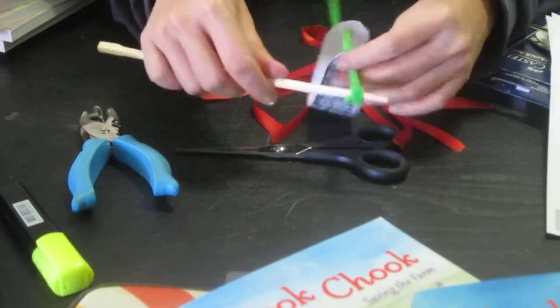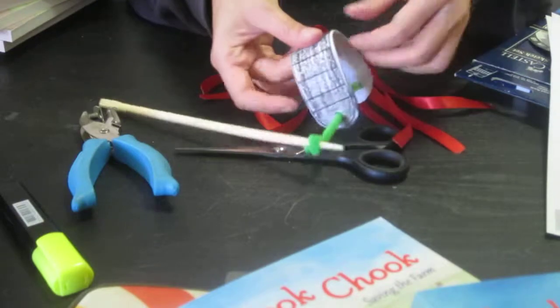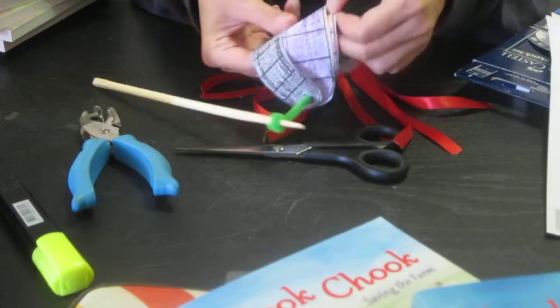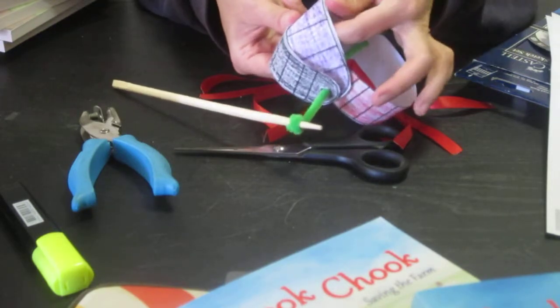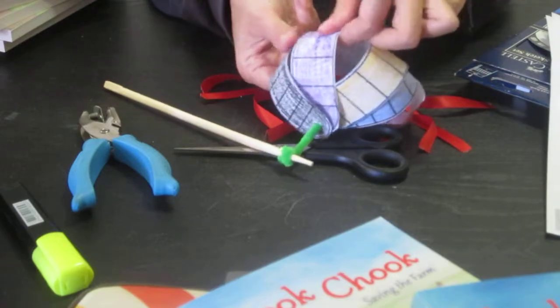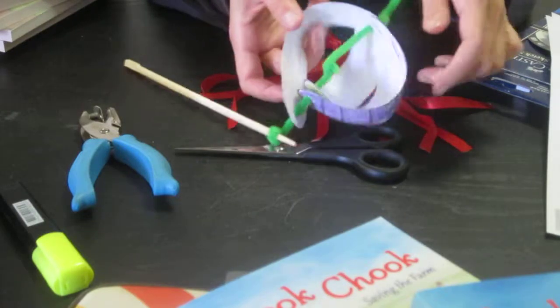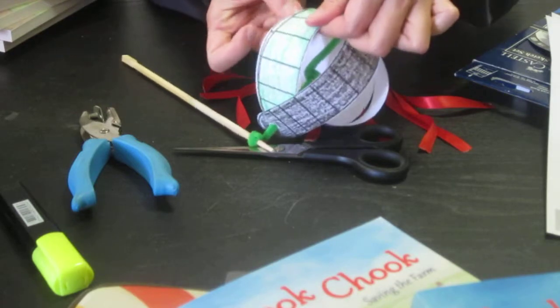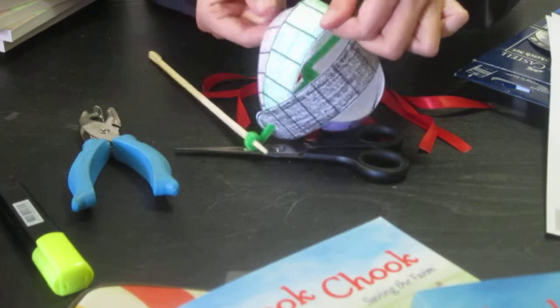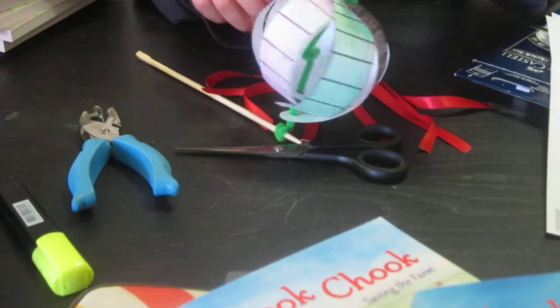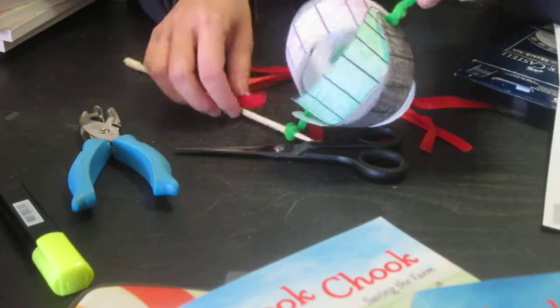And now, all you're going to do is fan out the strips of paper, and just fan them out so that it forms a bit of a ball. And this is going to be the body of your lantern. Alright, so just be mindful, don't force it or else you might tear the paper. Just make sure that some of them aren't caught underneath each other, which sometimes can happen.